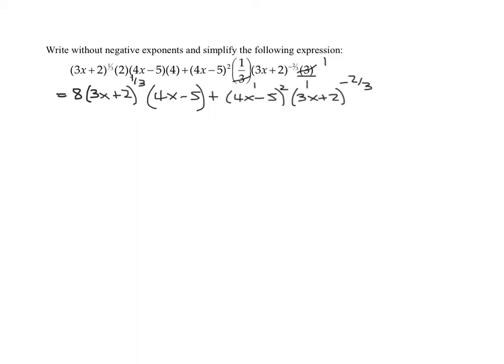So now in our first term, notice we have a three x plus two and a four x minus five. And we have exactly the same expressions in our second term. So we're going to have to factor out common factors of this binomial and this binomial. And before I do that, let me quickly review pulling out common factors.